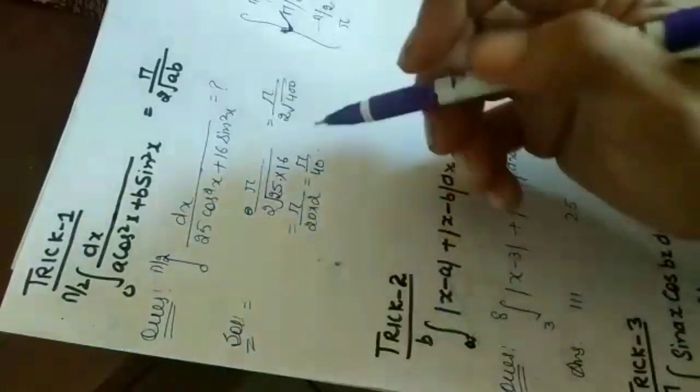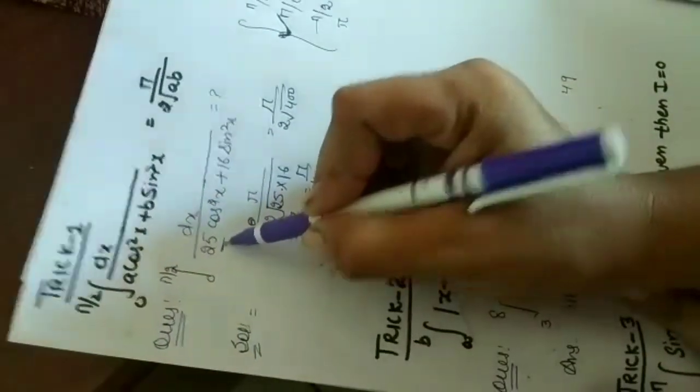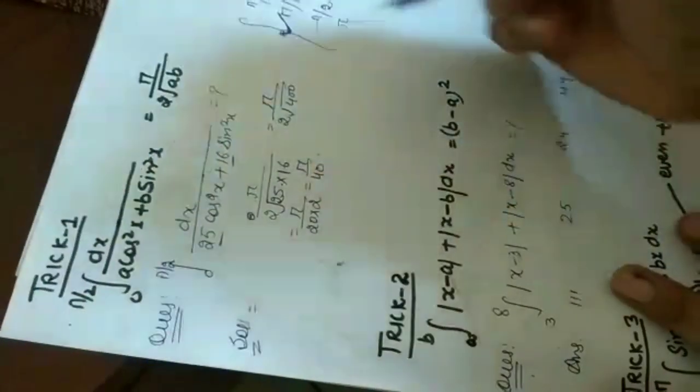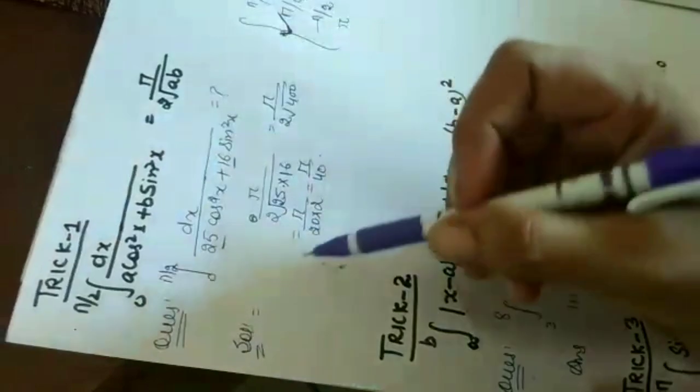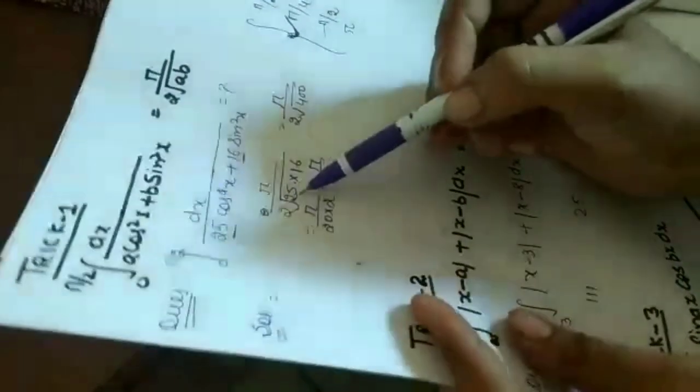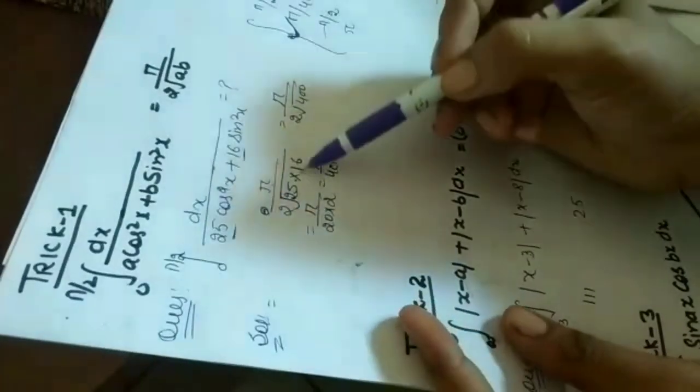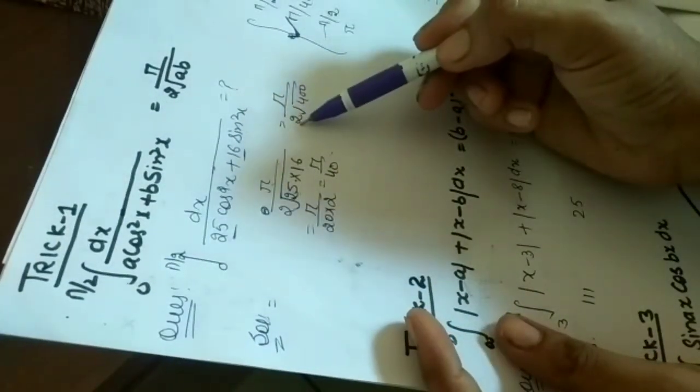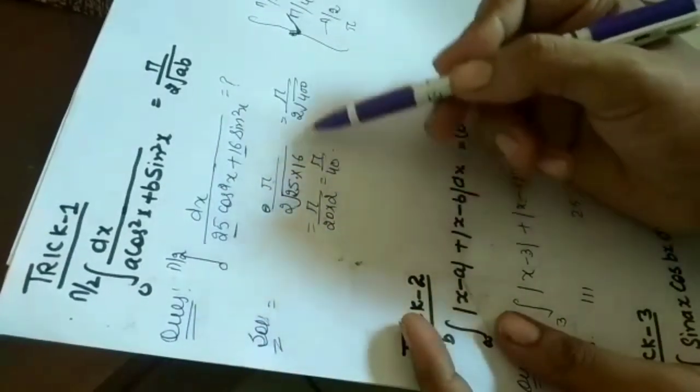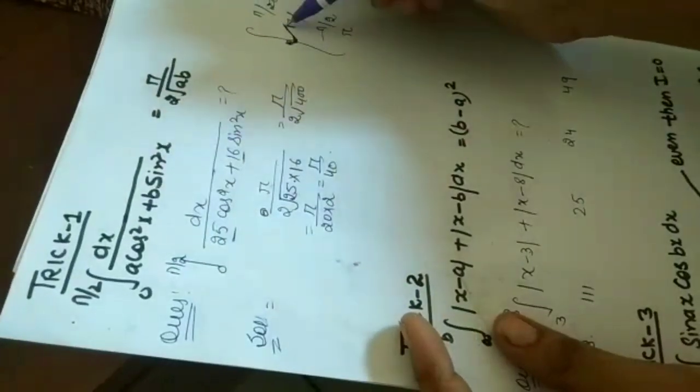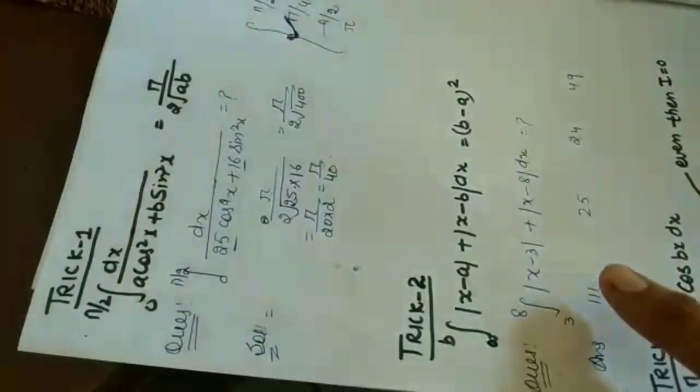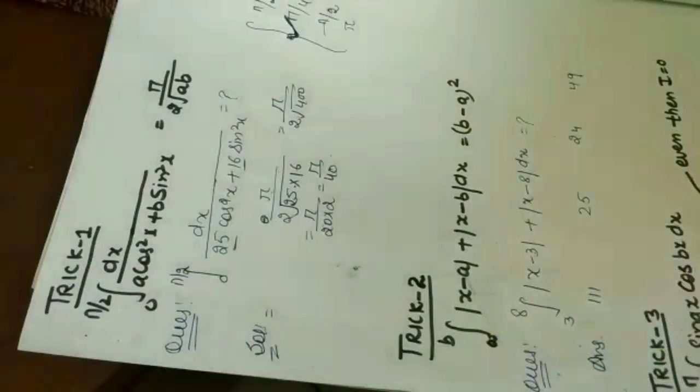So the value of a is 25 and b is 16. Direct answer is pi over 2 root of a multiply b, that is pi over 2 root 400, which is pi over 2 into 20, that is pi over 40. So our answer is pi over 40. It took just 30 seconds to solve this question.